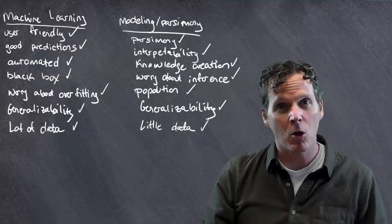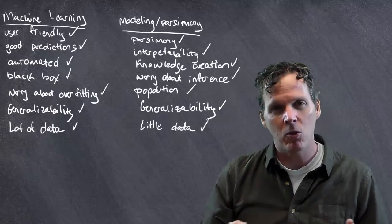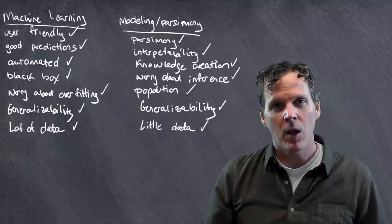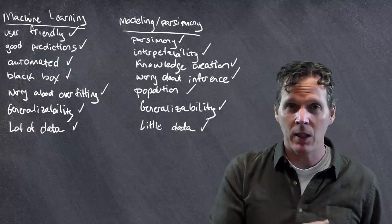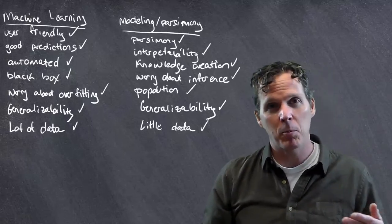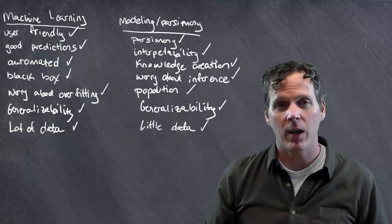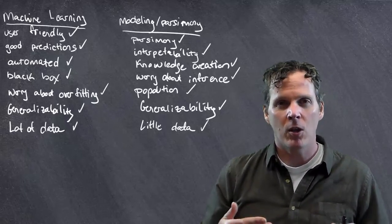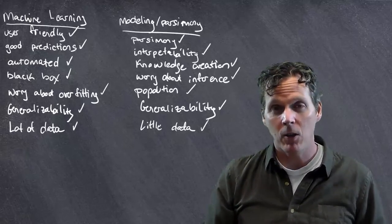Okay, so to me, these are some of the core considerations. I think there's other considerations, and there's also instances where the two fields bleed into each other. People have tried to bring some of these concepts from classical modeling into machine learning, and, of course, people have tried to bring some of these machine learning techniques into more classical styles of analysis, and so the clear distinction between the two is getting grayer and grayer as time goes on.